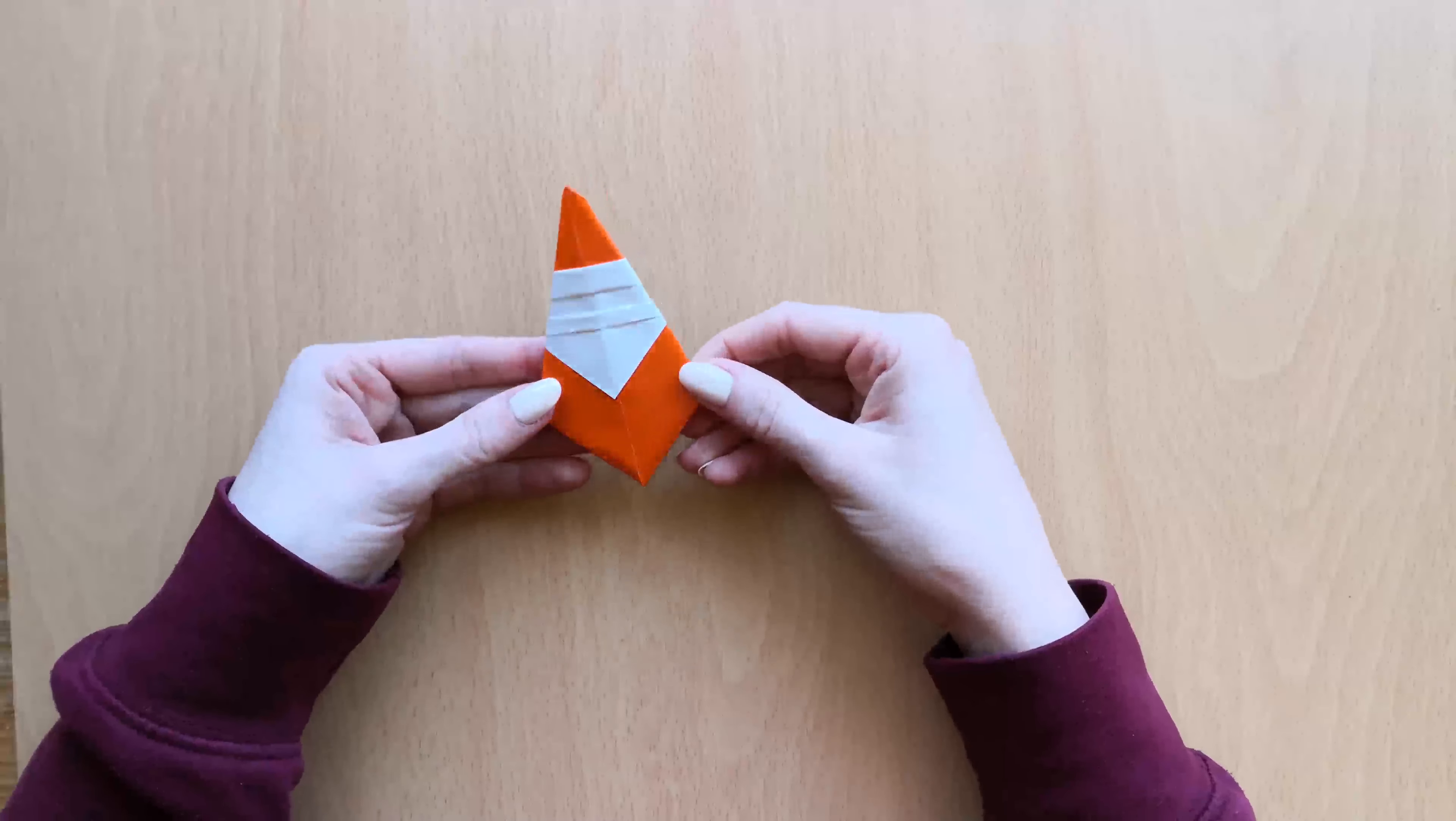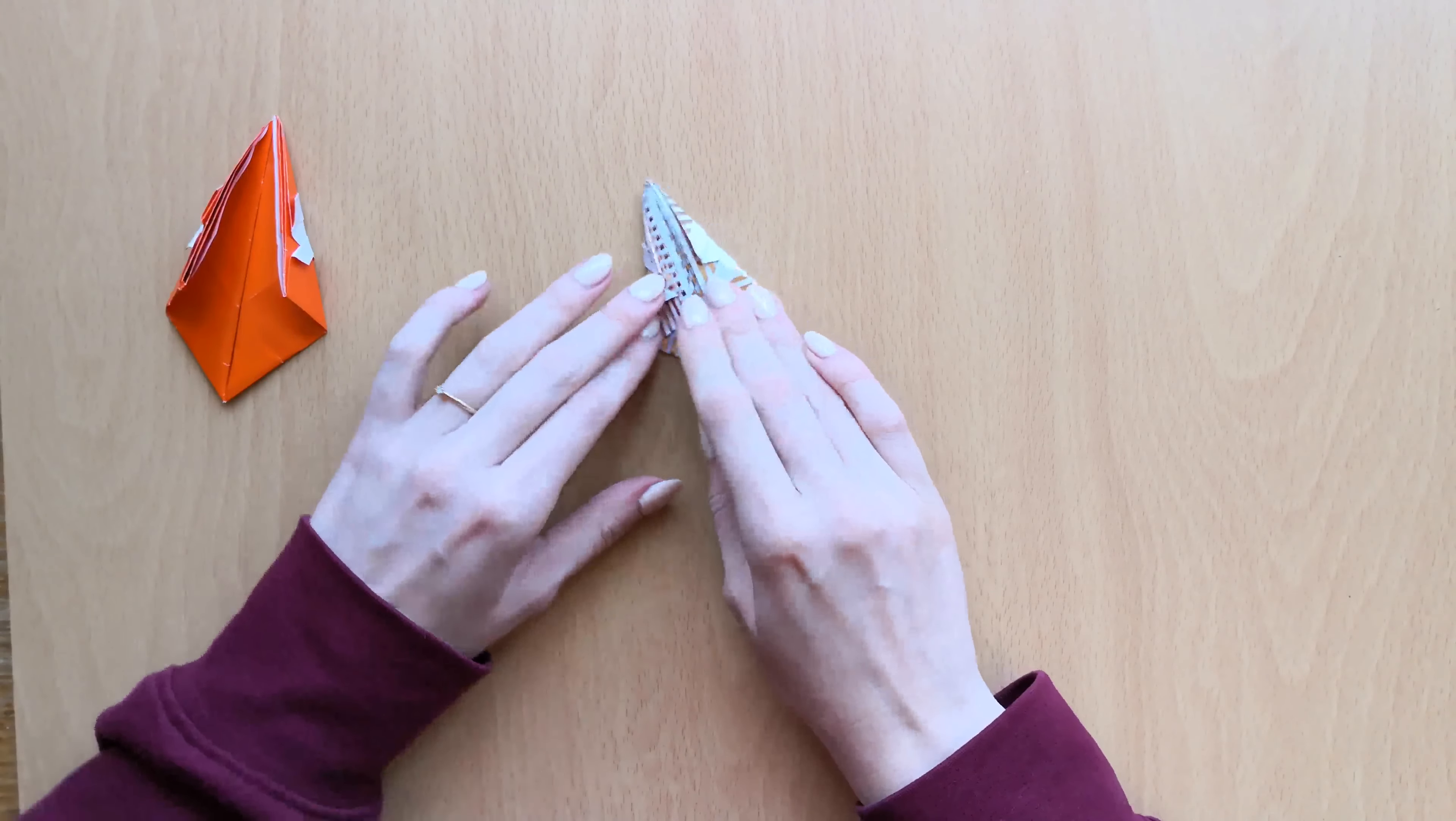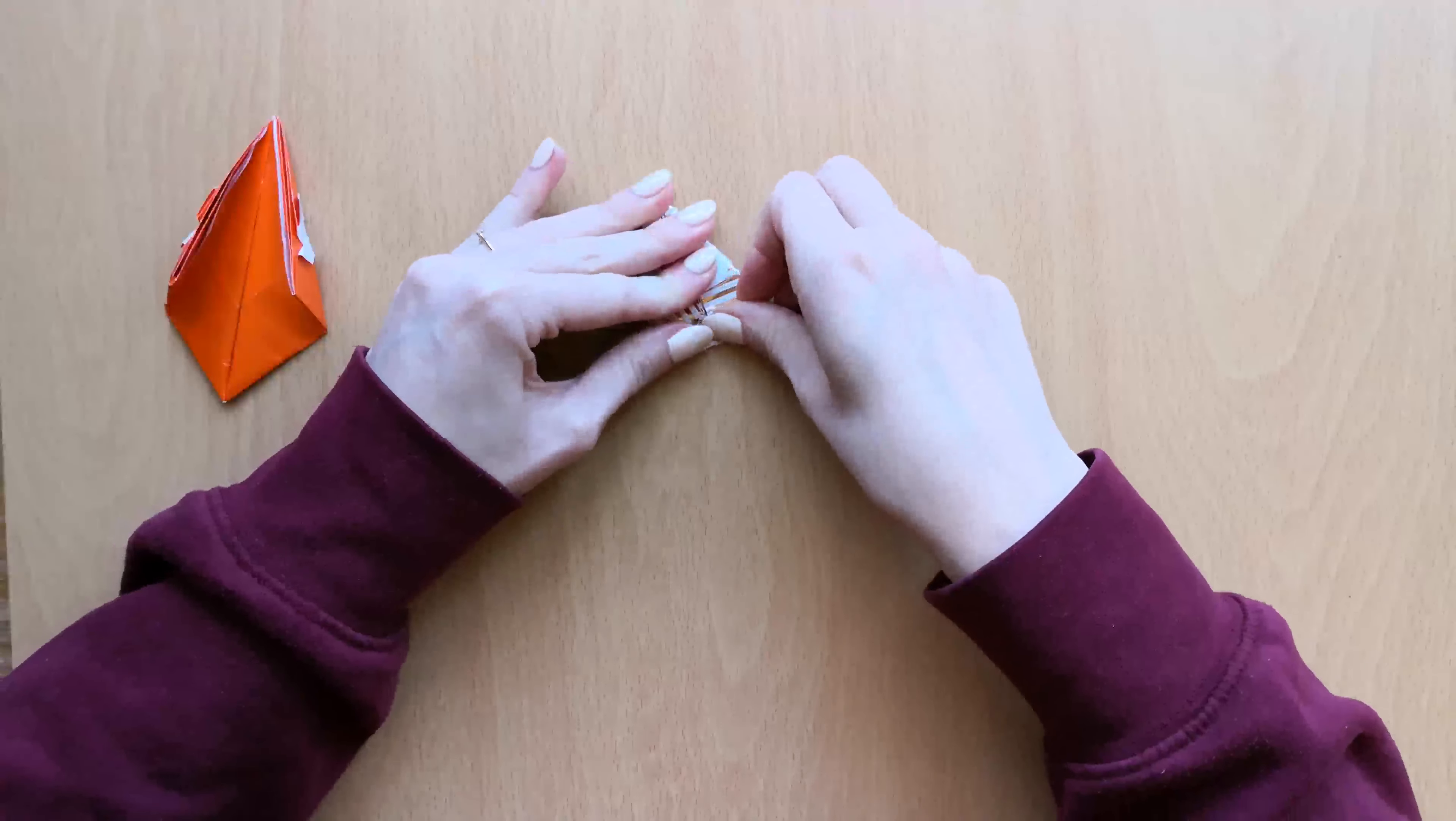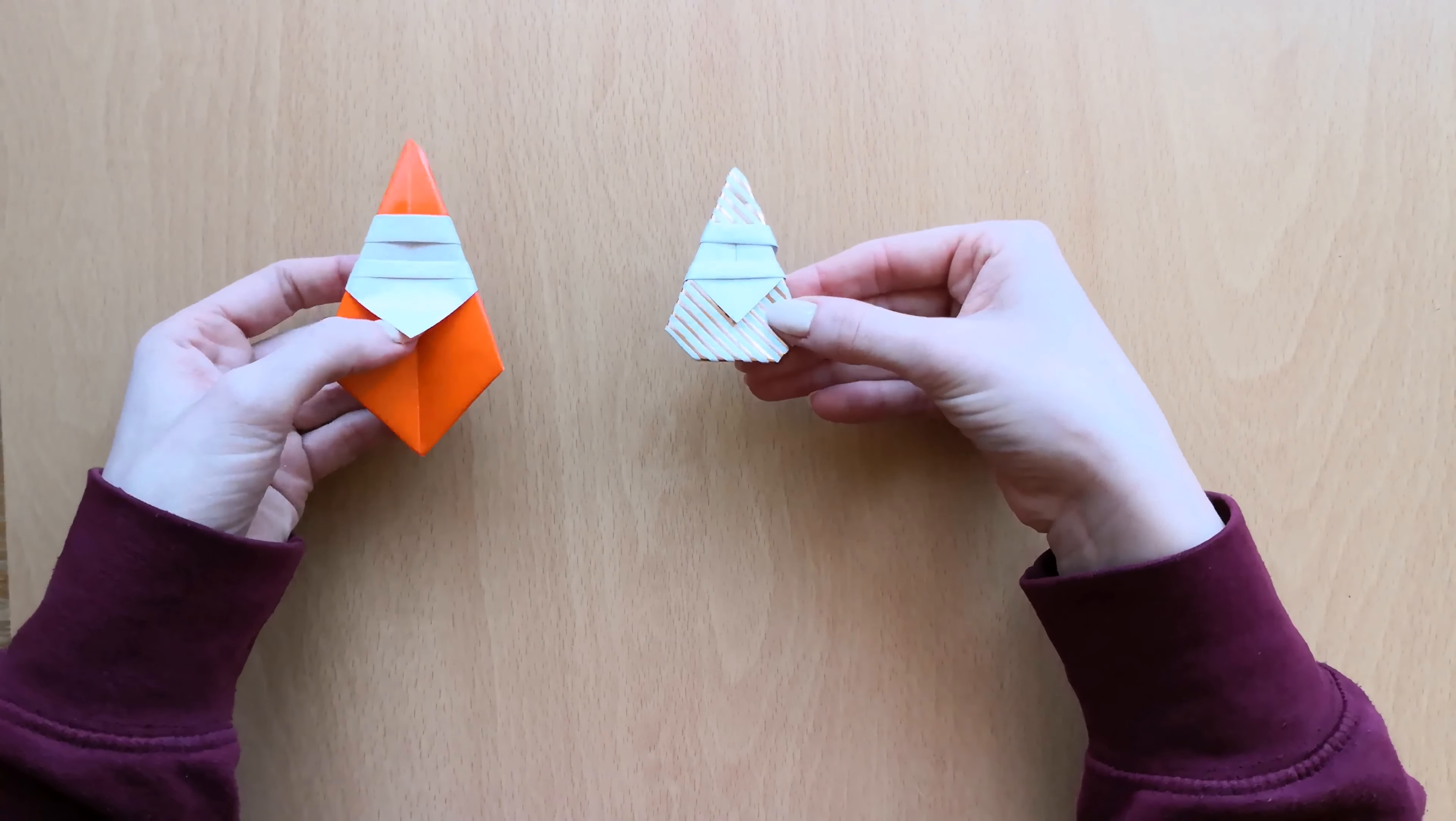Now we've made our paper Santa. You can leave it like this. Or you can turn it around. And you can fold this point to the line where these meet. Press it down. And you have a different kind of Santa.